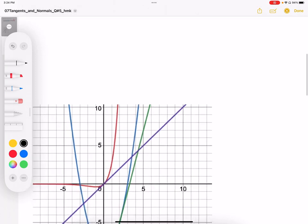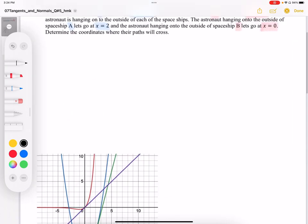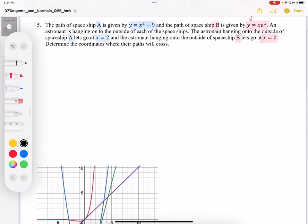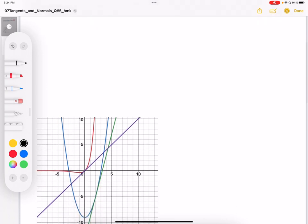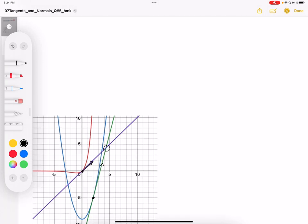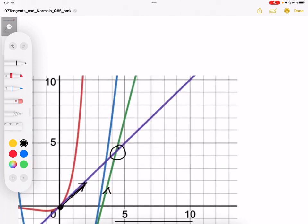So that red represents a path. And it says that spaceship A in blue lets go at x equals 2. So at that point, it's going to let go and fly in this direction along that green line. And then spaceship B is going to let go at x equals 0 and fly along that line there. And the intersection point is going to occur right at that point there.